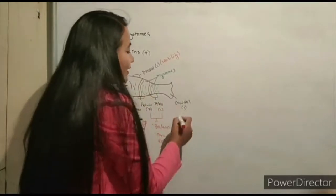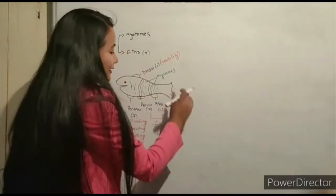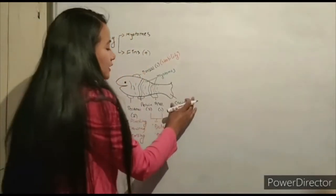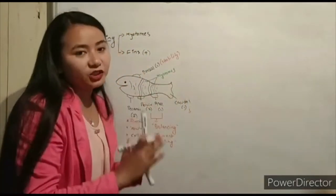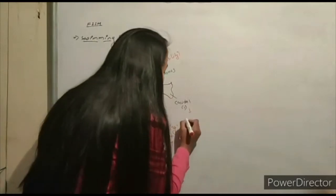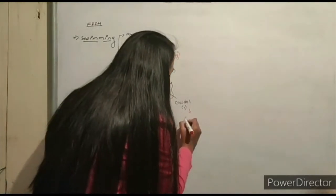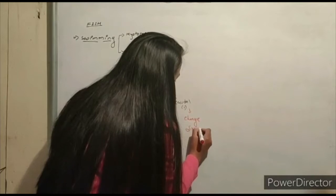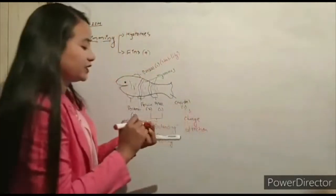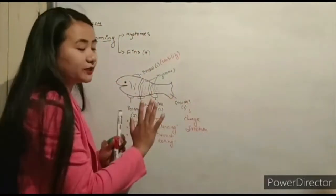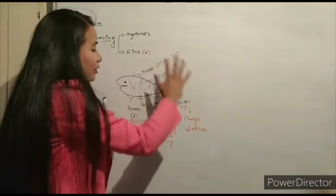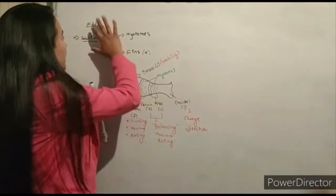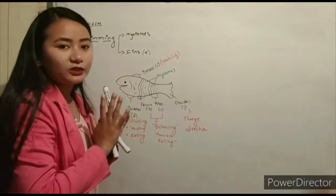The last one is the caudal fin, also called the tail fin. The caudal fin is responsible for direction change, helping the fish move from one place to another.